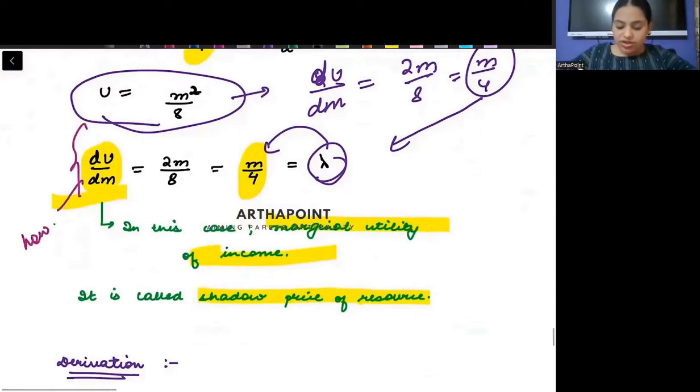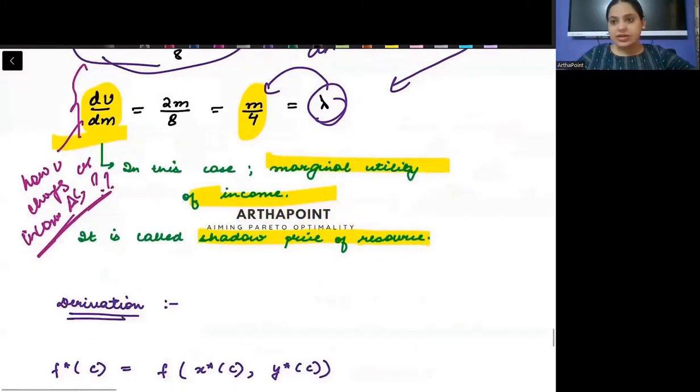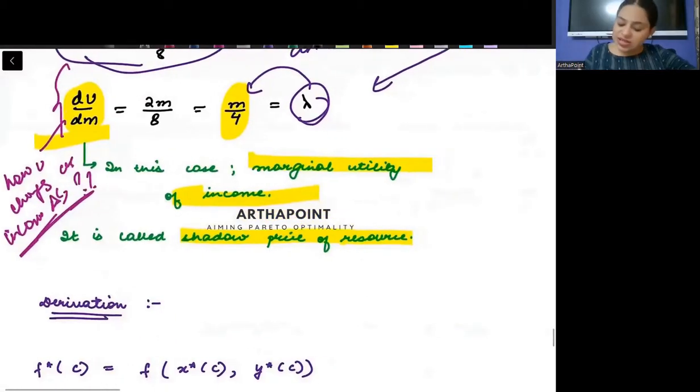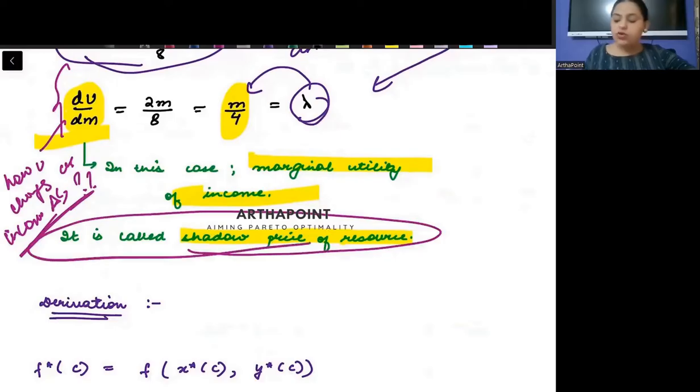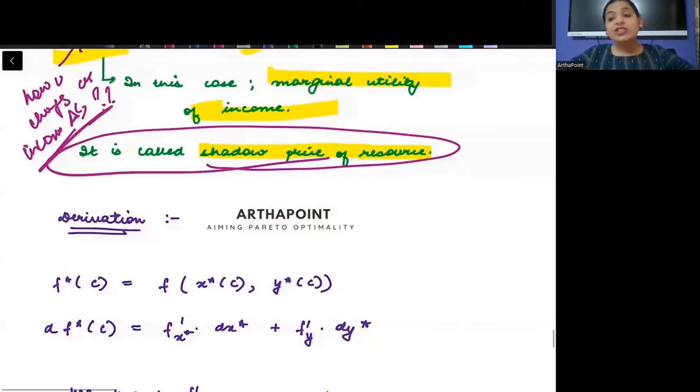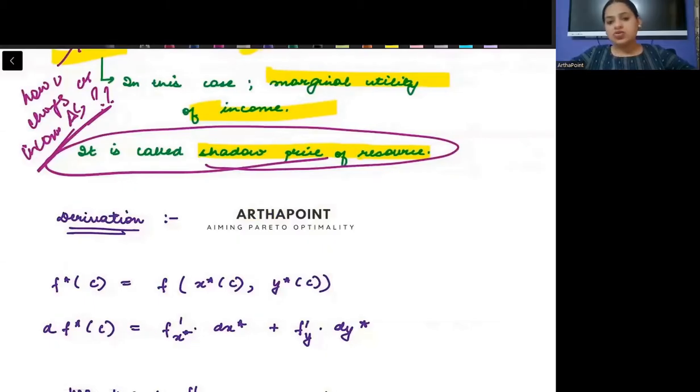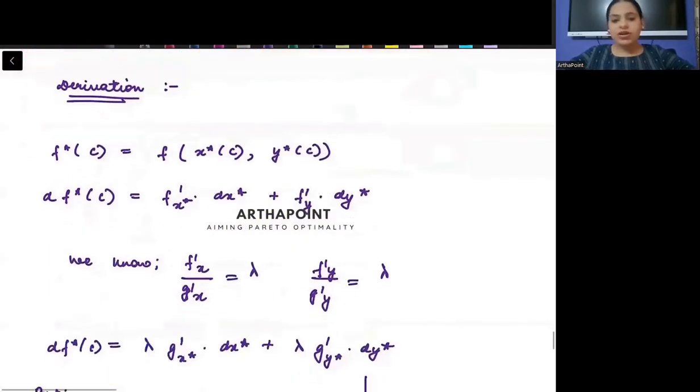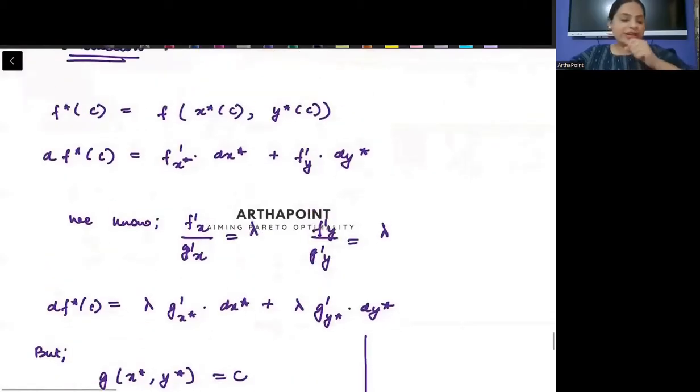Why am I calling this marginal utility of income? Because of its interpretation. What are you saying? How utility changes as income changes. So isn't this marginal utility of income? It is. Is cheese ko, is lambda ko, we call it as the shadow price of a resource. What is this called? Shadow price of a resource. Clear? Let me take you through a derivation.